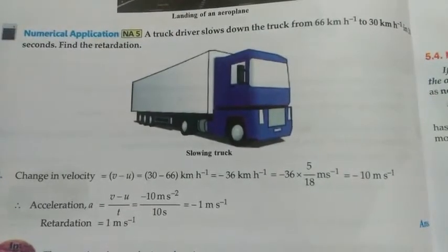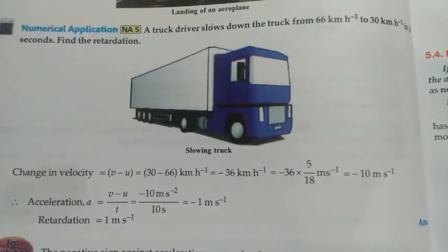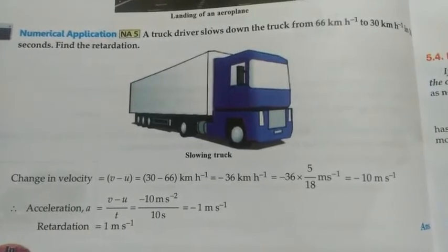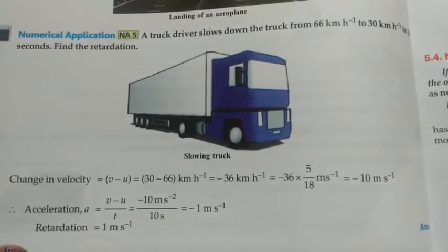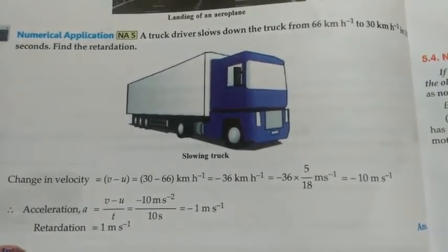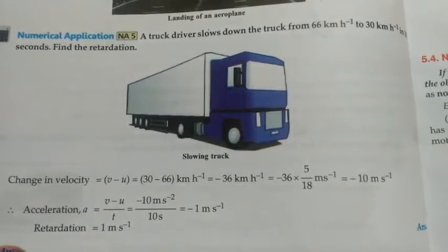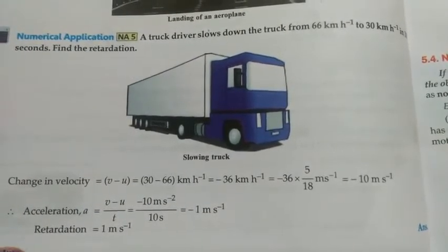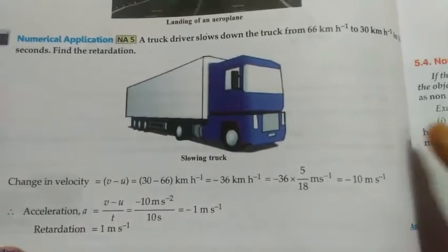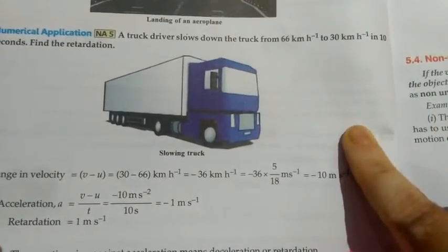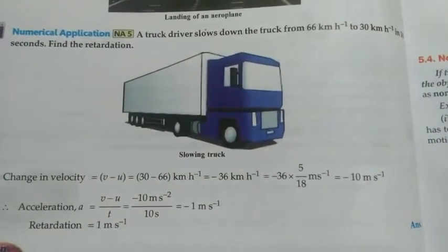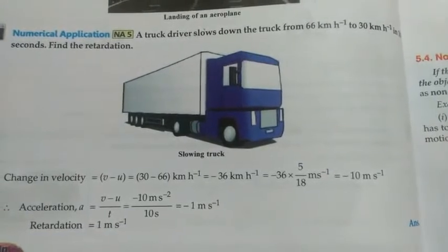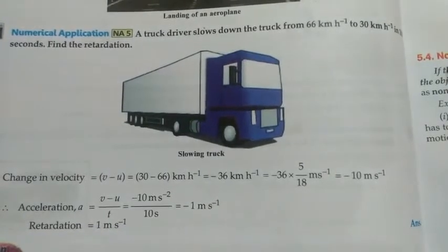Hello students and welcome back to the second part of today's lecture. Here is our next numerical: a truck driver slows down the truck from 66 km/h to 30 km/h in 10 seconds — find the retardation. So here time is given as 10 seconds and two velocities are given.